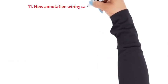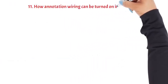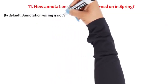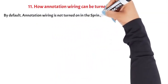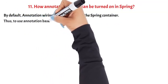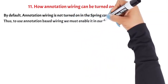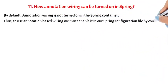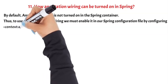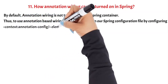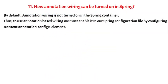Question 11: How can annotation wiring be turned on in Spring? By default, annotation wiring is not turned on in the Spring container. Thus, to use annotation-based wiring, we must enable it in our Spring configuration file by configuring the context:annotation-config element. For example.